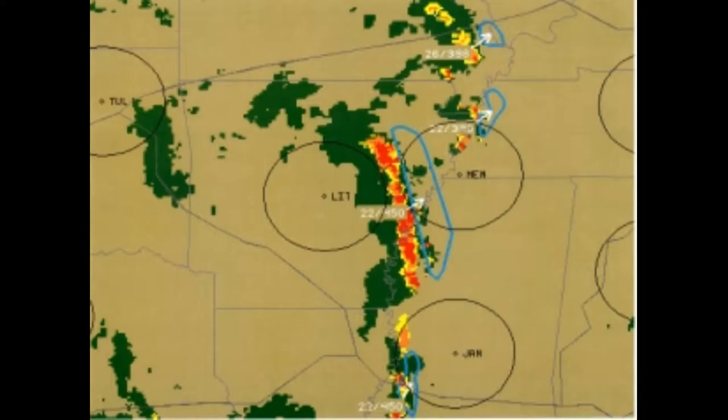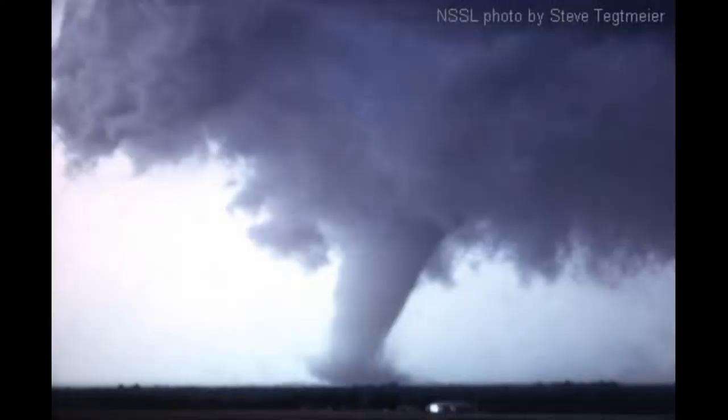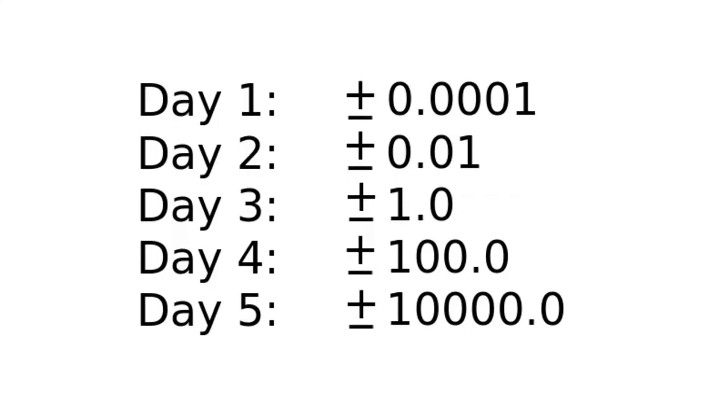Some deterministic processes are more difficult to predict. For example, even our best models can only predict the weather a few days in advance. Why? Because small imprecisions in the model lead to even greater imprecisions in predictions for the next day. If you want to predict many days into the future, you need to start with a really precise model.